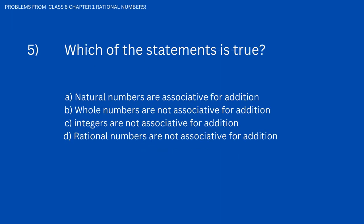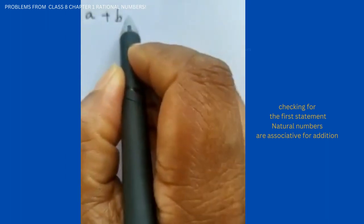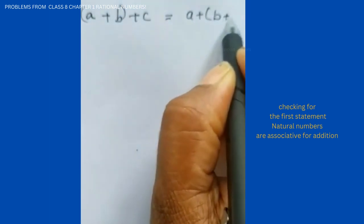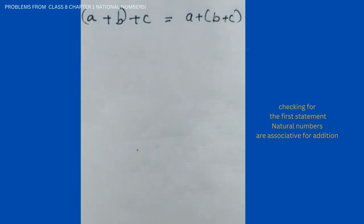Next problem: which of the following statements is true? Options are A) natural numbers are associative for addition, B) whole numbers are not associative for addition, C) integers are not associative for addition. The associative property for addition states: (A + B) + C = A + (B + C).